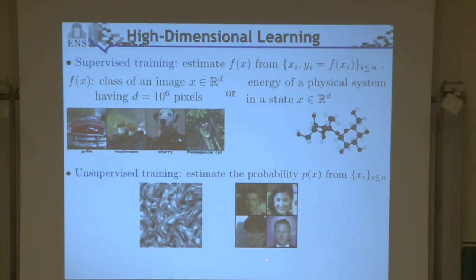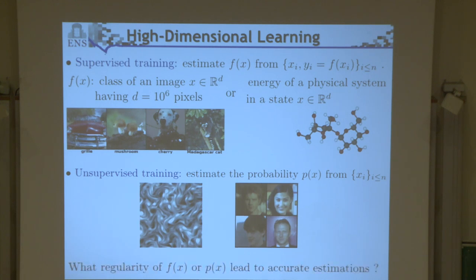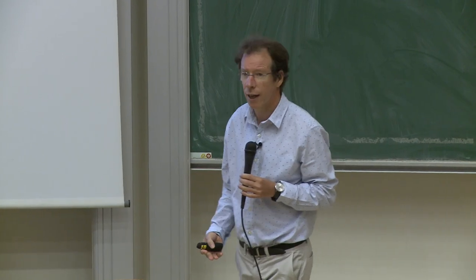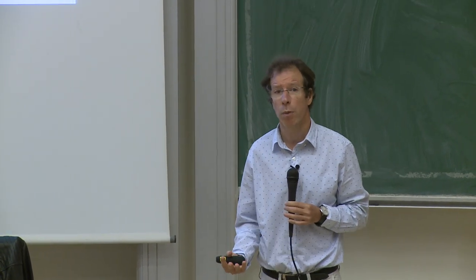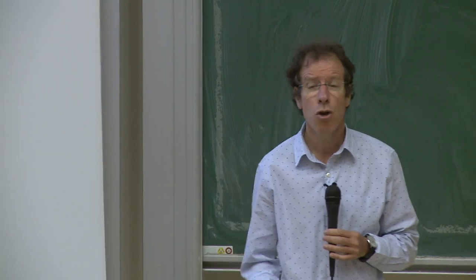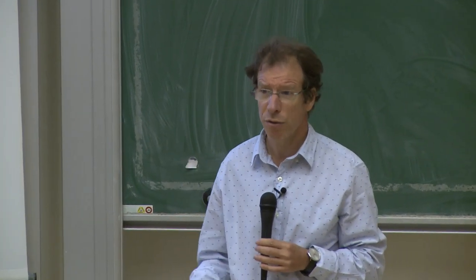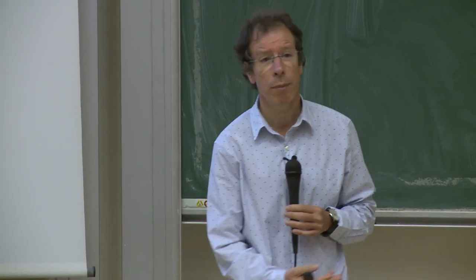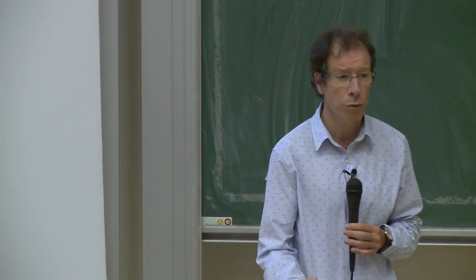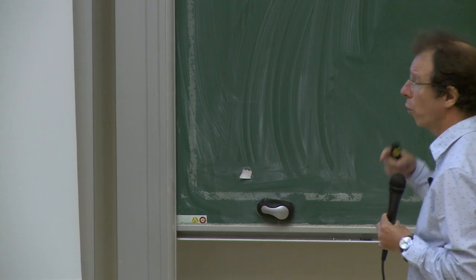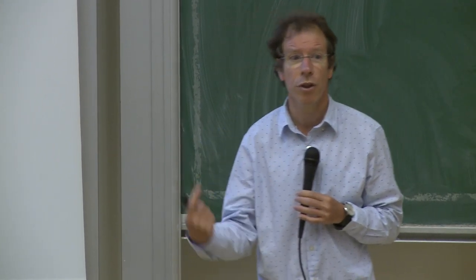What is behind that? Even more spectacular is that autoencoders can synthesize much more complex random processes which are totally non-stationary and non-ergodic, such as faces. The common question behind all of this is that in order to solve such high-dimensional problems from a relatively limited amount of data, you need to estimate an object f of x which is extremely regular. One of the mathematical questions is to understand the notion of regularity in very high dimension.